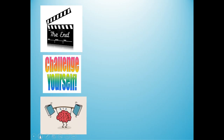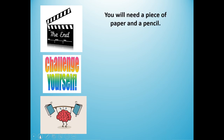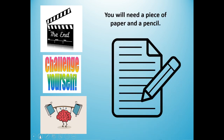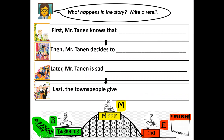Now it's the end of our review. It's time to challenge yourself. You will need a piece of paper and a pencil because you're going to answer this question: What happens in the story? Write a retell. We're using our traffic light colors. Green means go — write first. Then yellow means slow down — tell what happened in the middle: later, still in the middle. And then finally red means stop — tell what happened at the end. Last.